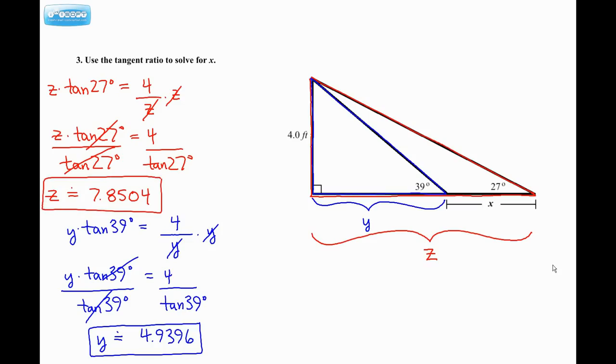So pretty much all of the work is done, just need to find x. So x is just given by z take away y. So that equals, I'm just going to put these numbers in my calculator, so I had 7.8504 minus 4.9396. So now I'm going to round. X is approximately 2.91. I'll stop at the nearest hundredth, and there we go. That's our answer.